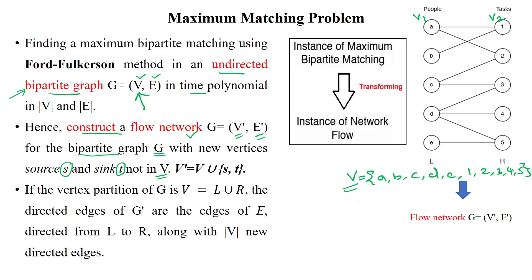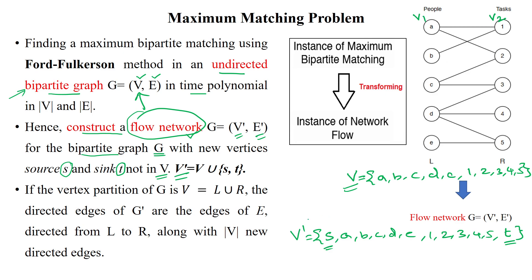When making the flow network, it will have a set of vertices including source S, then all vertices available in the bipartite graph, and then a new vertex T as the sink. We add those vertices to construct the flow network, so V' equals V union {S, T}.